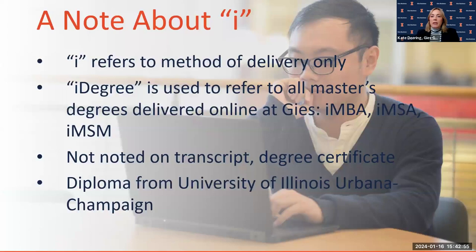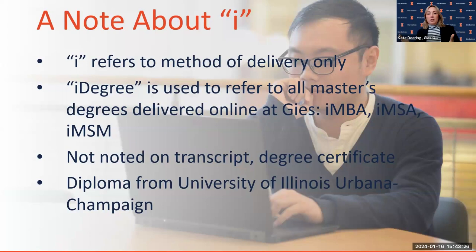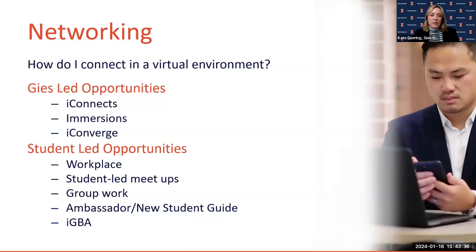A note for all of our master's degrees: the 'I' prefix refers to the method of delivery only — online. This will not be noted on your transcript or degree certificate. You will earn a diploma from the University of Illinois — a Master of Science in Management or a Master of Business Administration — without 'I' or 'online' appearing anywhere on those materials.